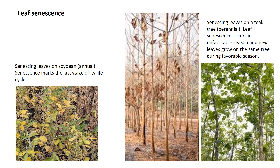First, let us understand leaf senescence in brief. Leaf senescence is the most common type of senescence observed in plants. It may be associated with age, where the plant senesces after completing its life cycle, as seen in annual plants. The nutrients released as a result of senescence are usually transferred to developing fruits and seeds, leading to increased reproductive success.